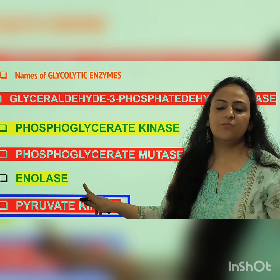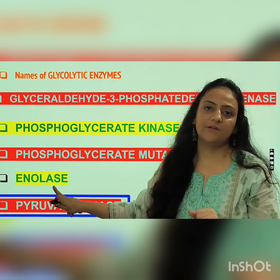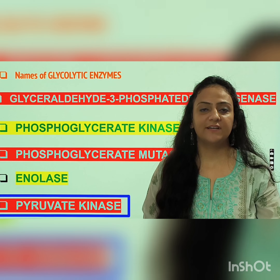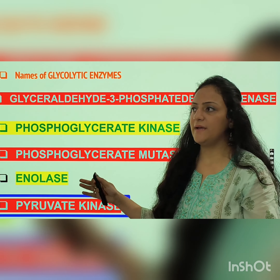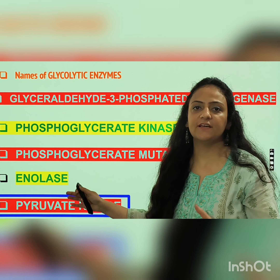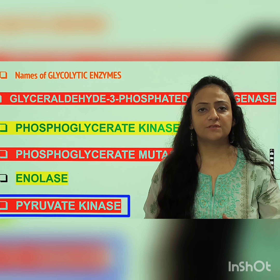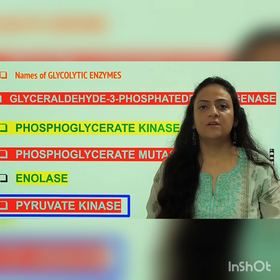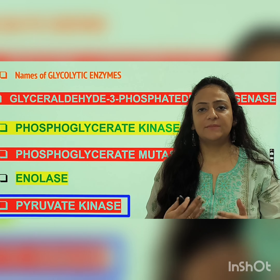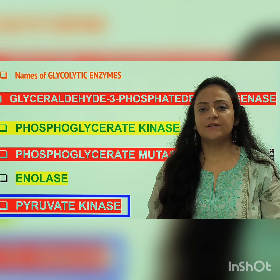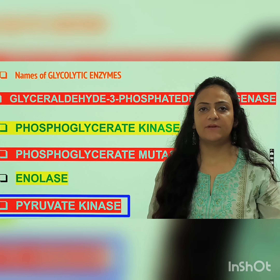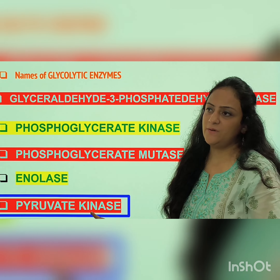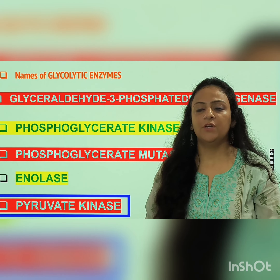With the help of enzyme phosphoglycerate mutase, 3-phosphoglycerate is converted to 2-phosphoglycerate. Then enolase converts 2-phosphoglycerate to phosphoenolpyruvate. An important point: enolase is inhibited by fluoride. So whenever we are estimating glucose in samples, we add the anti-glycolytic agent sodium fluoride, because fluoride binds with enolase, forms a complex, and inhibits its activity — stopping glycolysis. Without adding this anti-glycolytic agent, the glucose level in the sample would be falsely low.